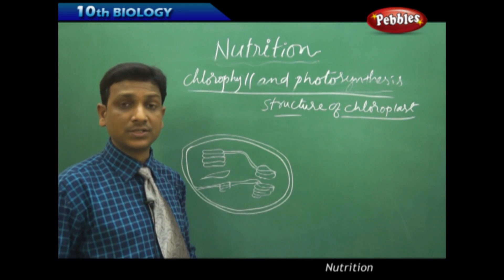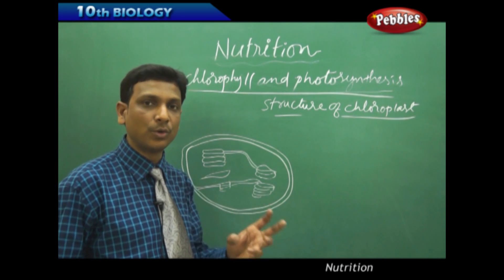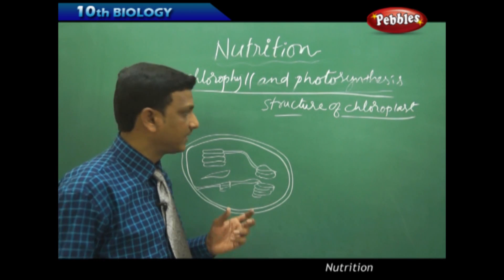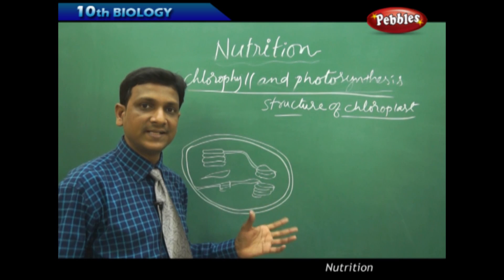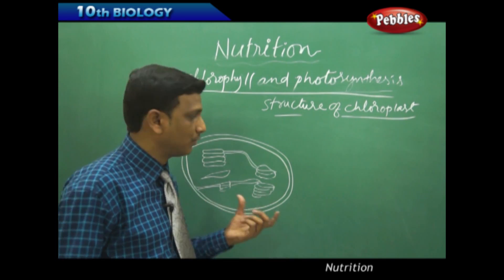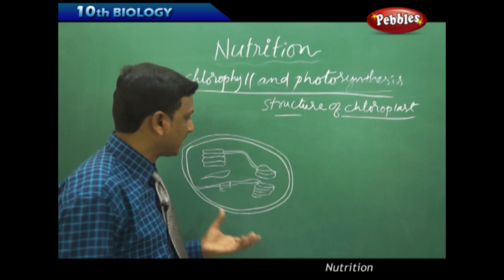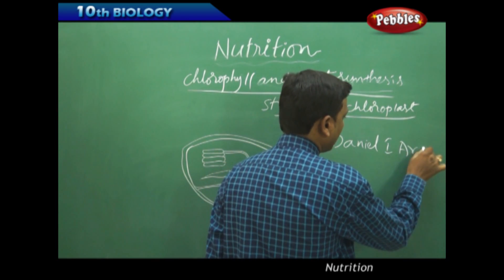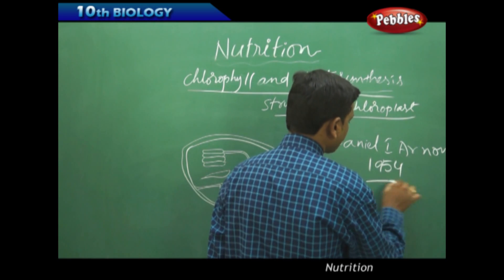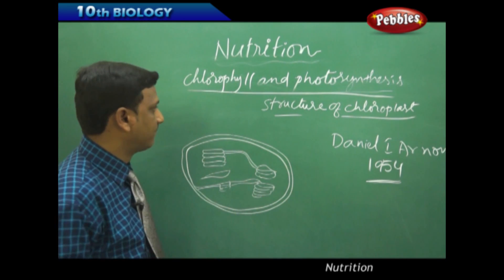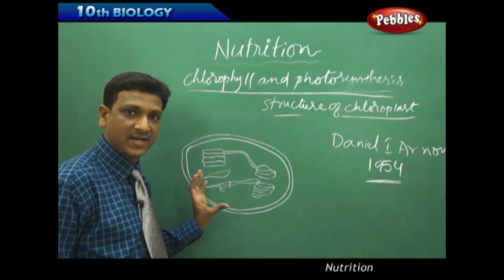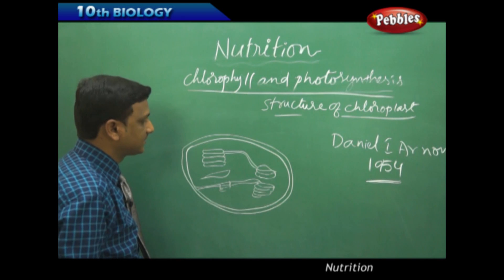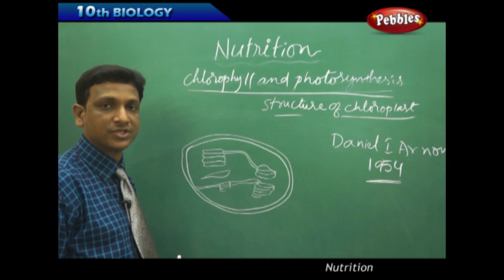Julius von Sachs extracted chlorophyll — the green pigment — from leaves. Extracting the pigment is easier compared to extracting the entire chloroplast. To study the structure of the chloroplast it must be extracted from the cell, but when a cell is broken the chloroplast also breaks down. It was not possible to extract the intact organelle until a scientist called Daniel I. Arnon in 1954, who successfully extracted the chloroplast and studied its components.